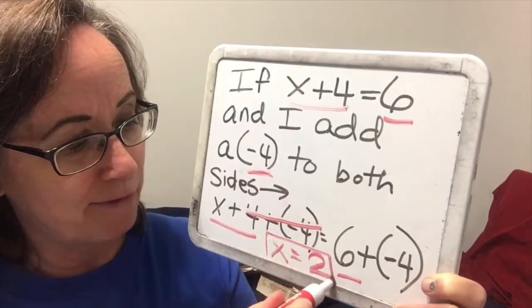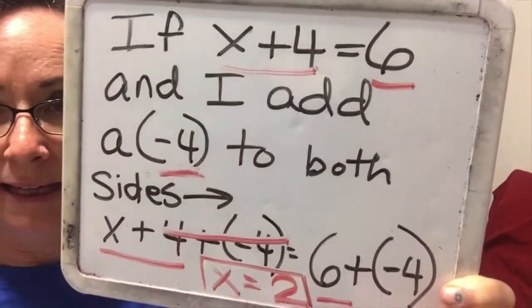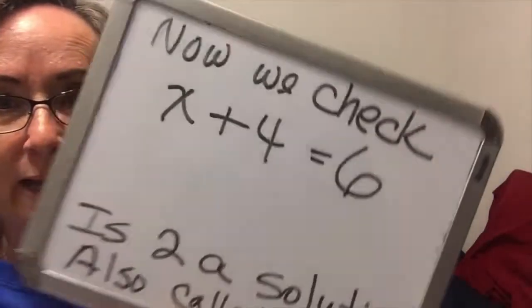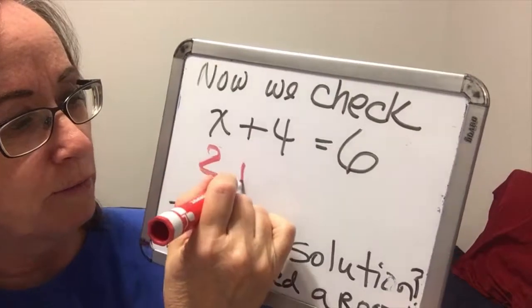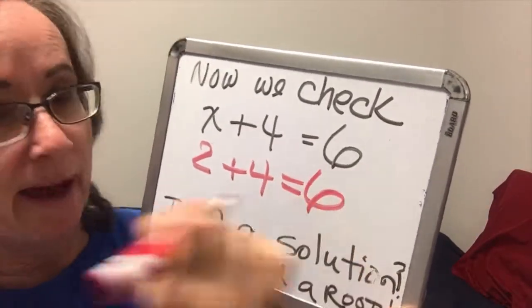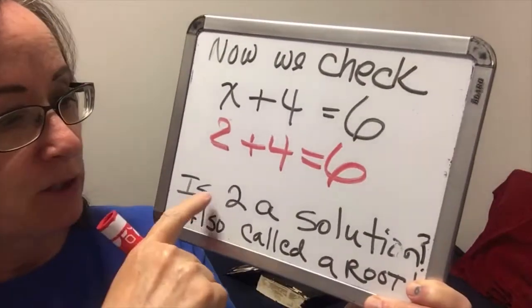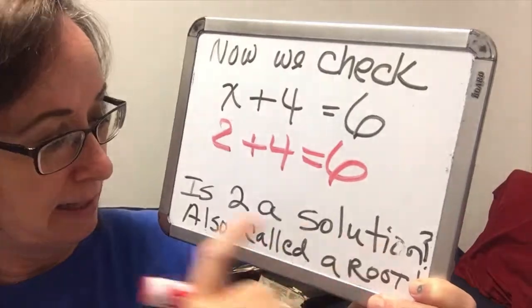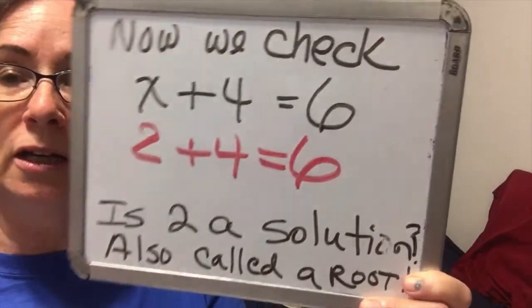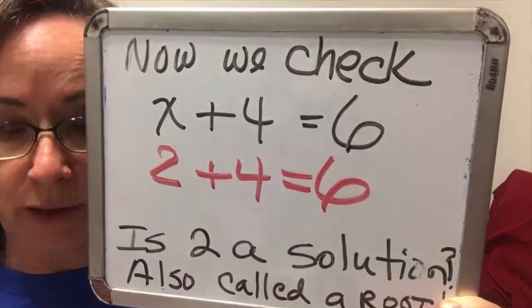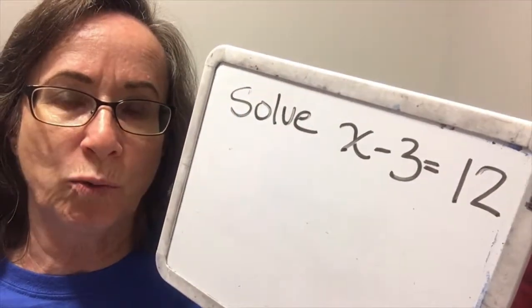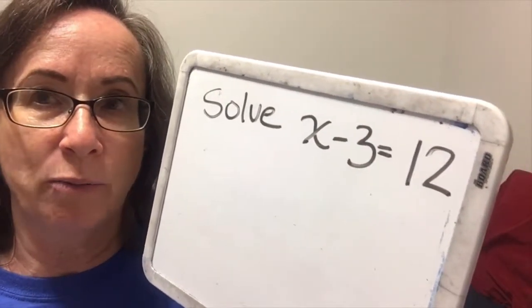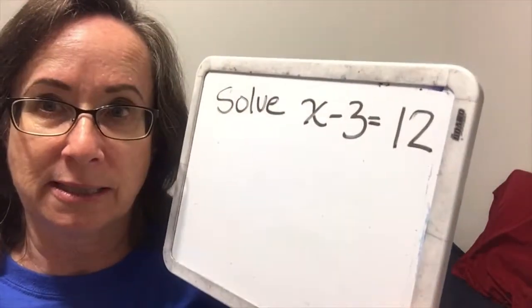Now that we've found x equals 2, let's go ahead and check it. We're going to plug in a 2 for the x and see if we have a true statement — and we do. Is 2 a solution? Yes, it is. It is also called a root. So a solution or a root is a number that makes an equation true. And equivalent equations have the same solutions.